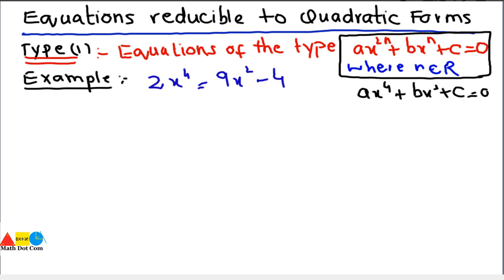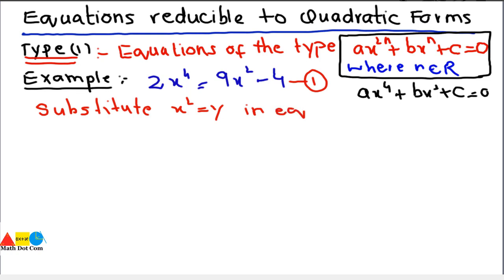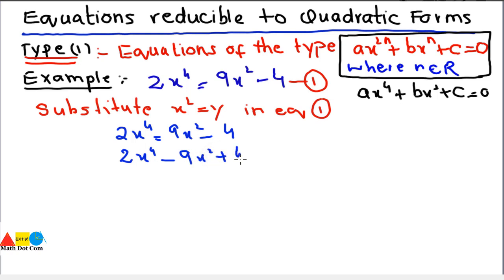What kind of substitution? We have to substitute x squared equals to y in equation 1. Whenever you come across equations like this, you substitute x squared equals to y so that we can reduce it to the quadratic form, and then use the methods we have already seen to solve quadratic equations. So let's write it as 2x^4 minus 9x squared plus 4 equals to 0.